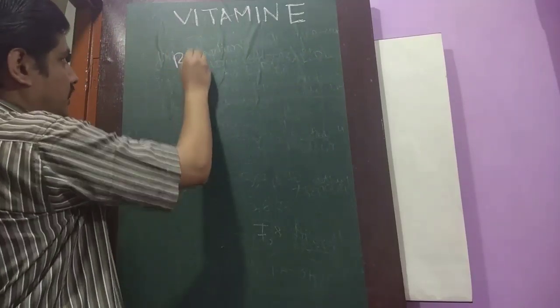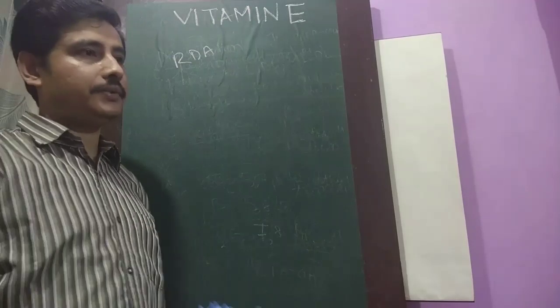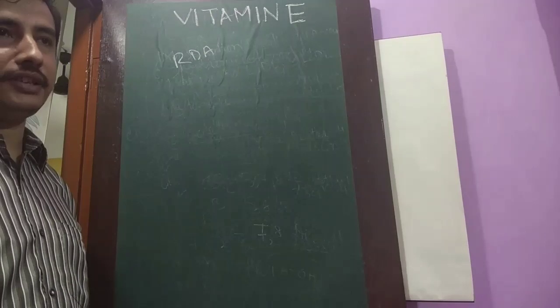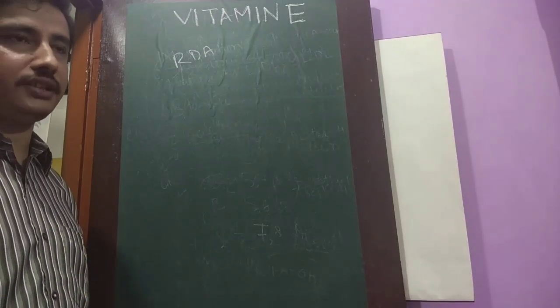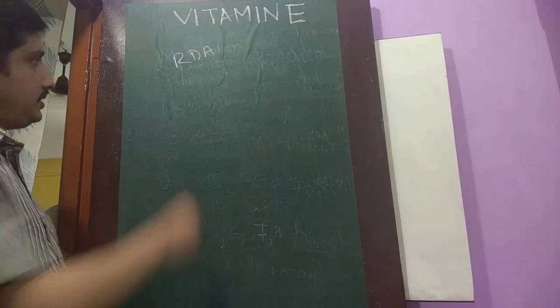Recommended dietary allowance. It is around 8 mg for women, 10 mg for men. For pregnant ladies, it is 10 mg. For lactating mothers, it is 12 mg. And for children, it is 7 to 10 mg.